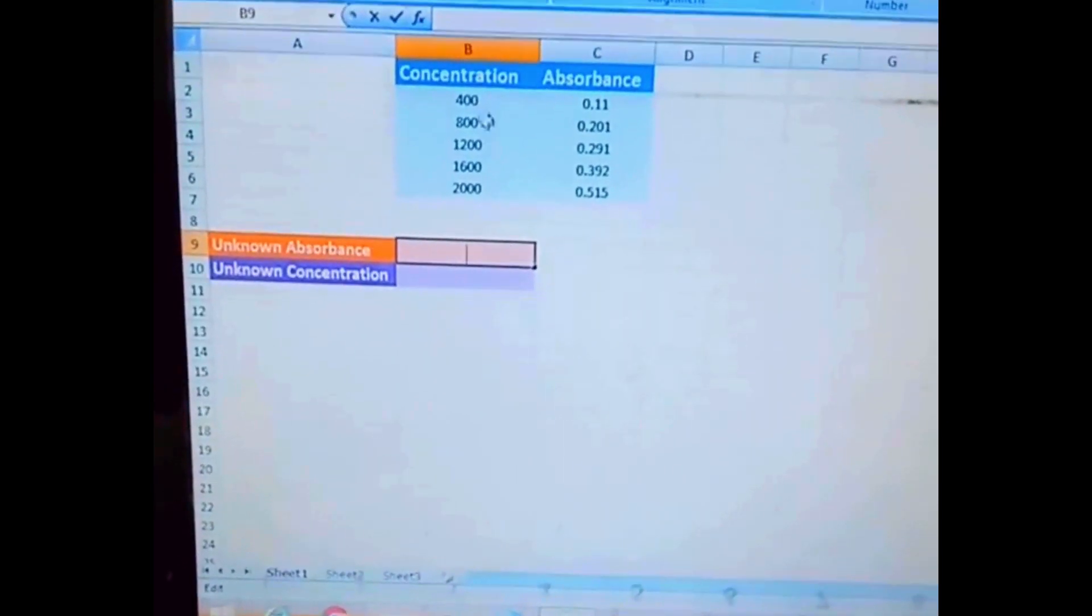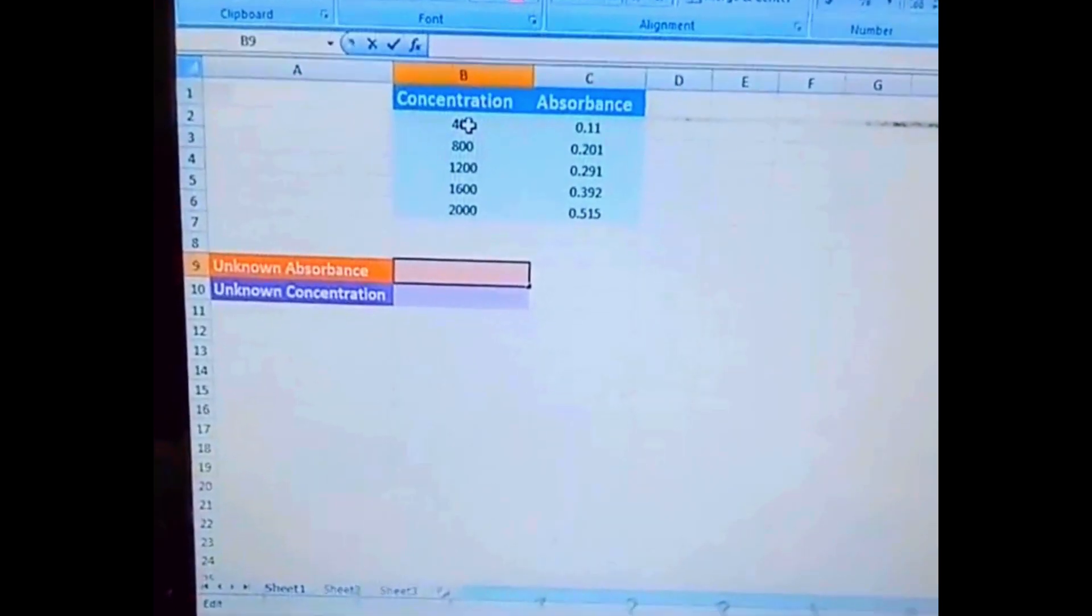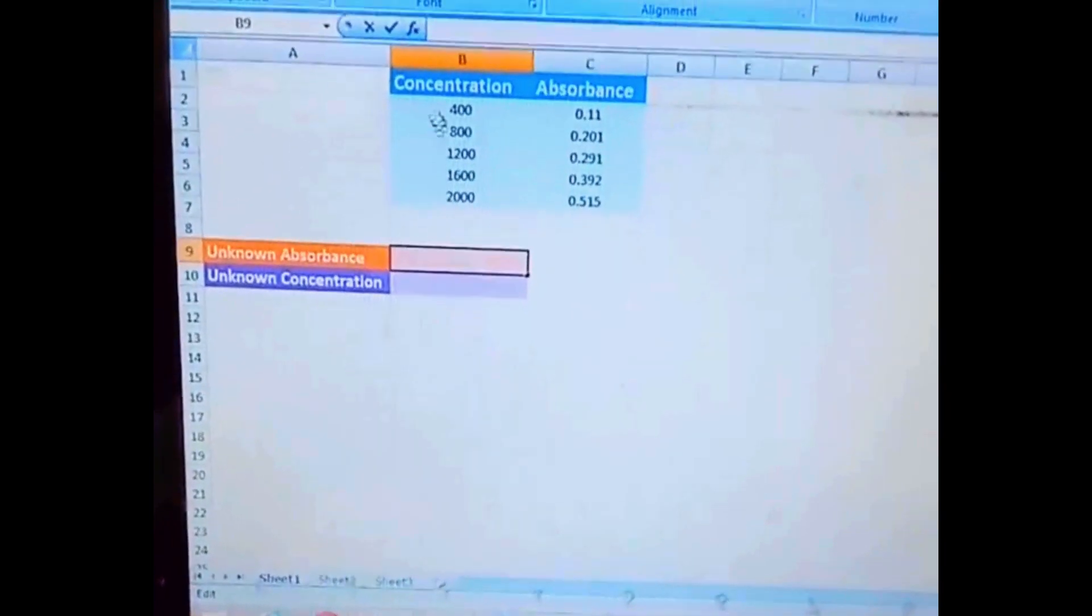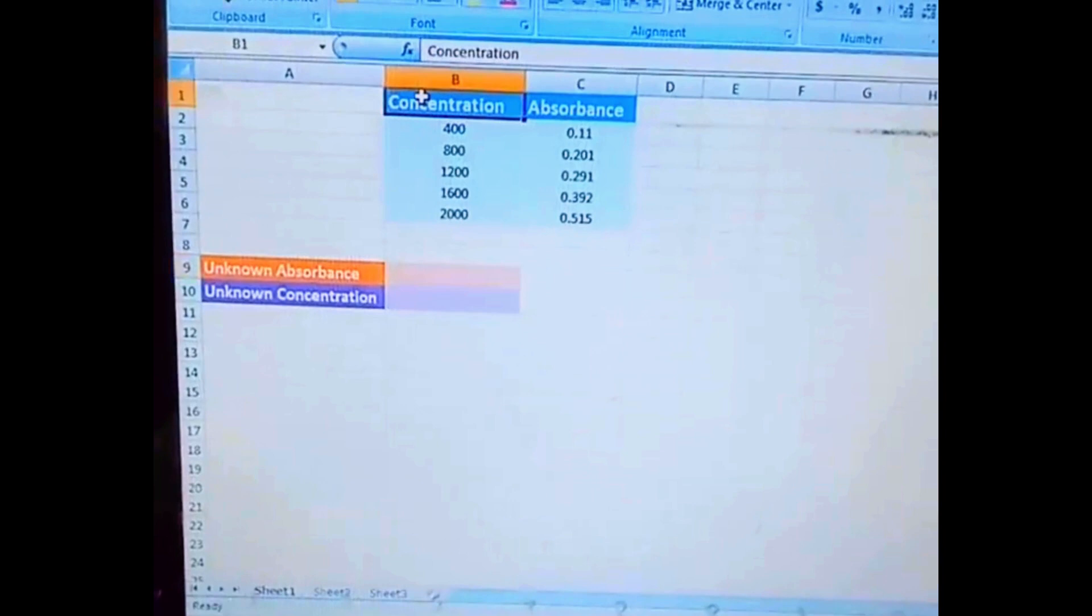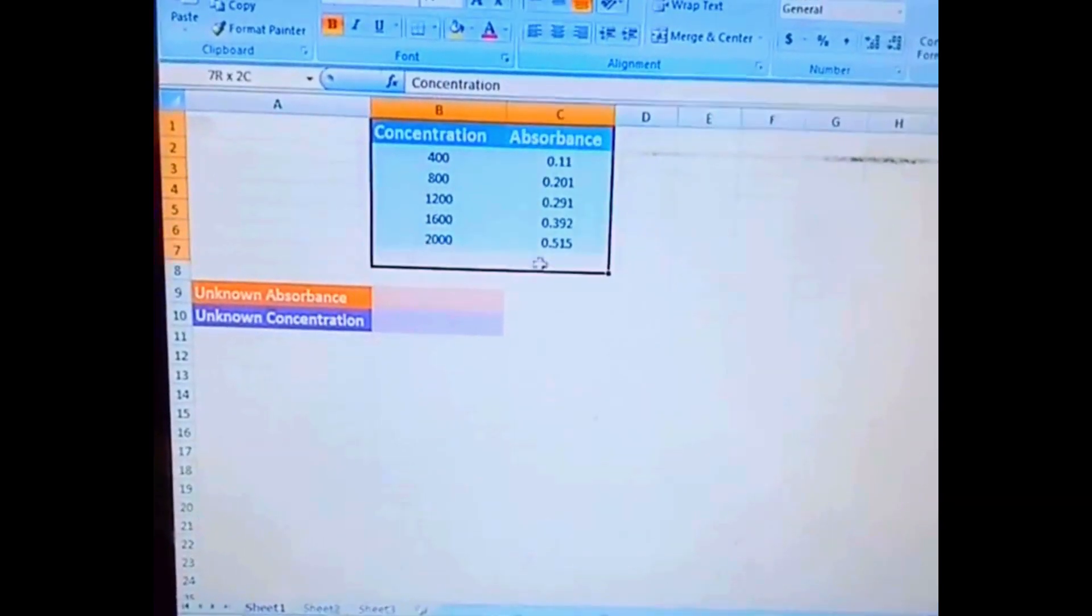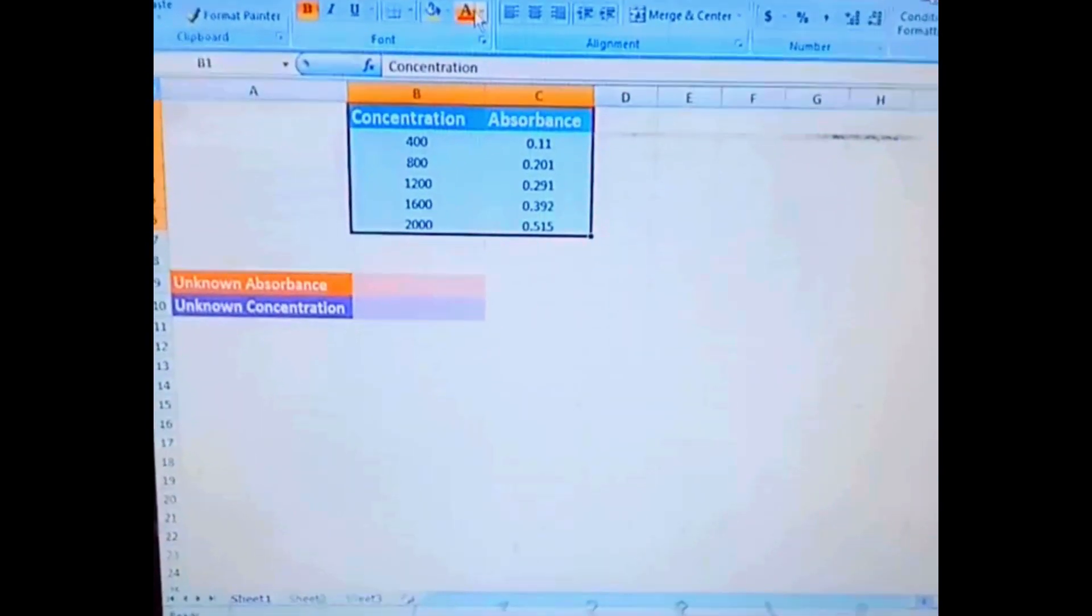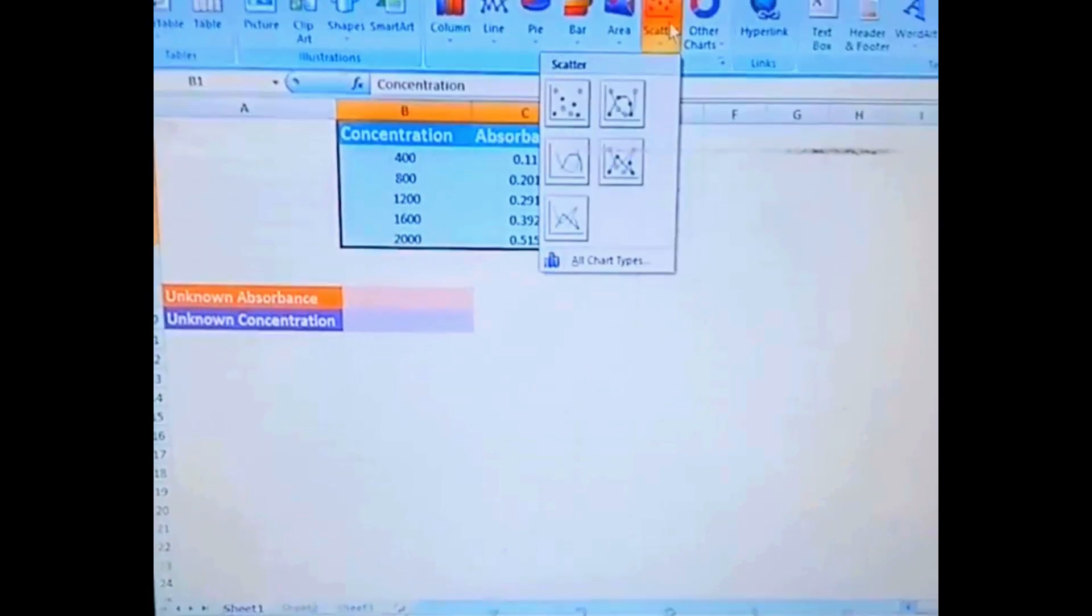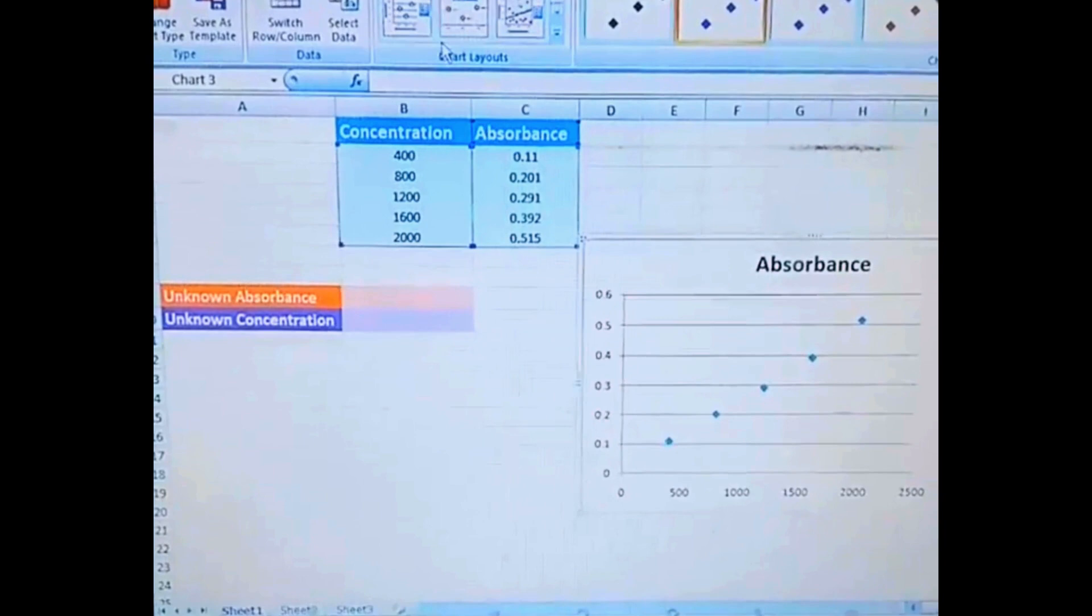Firstly, we have to create the scatter plot for the calibration curve. For that, I'm selecting our values of concentration as well as the absorbance. Now insert scatter, this first graph here, and by layout we can put according to our choice.